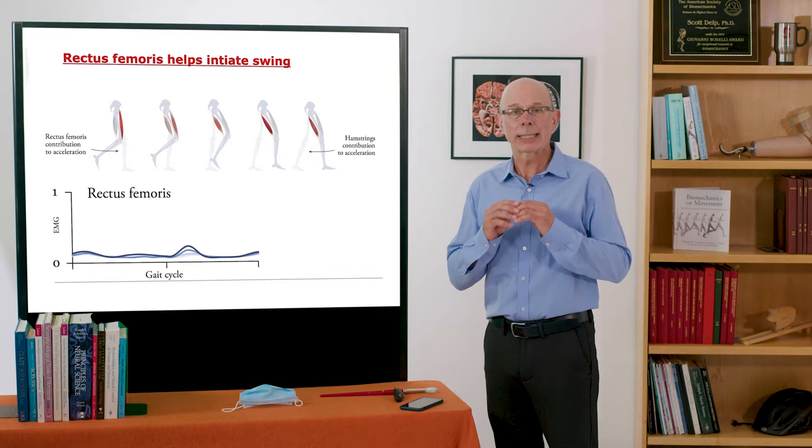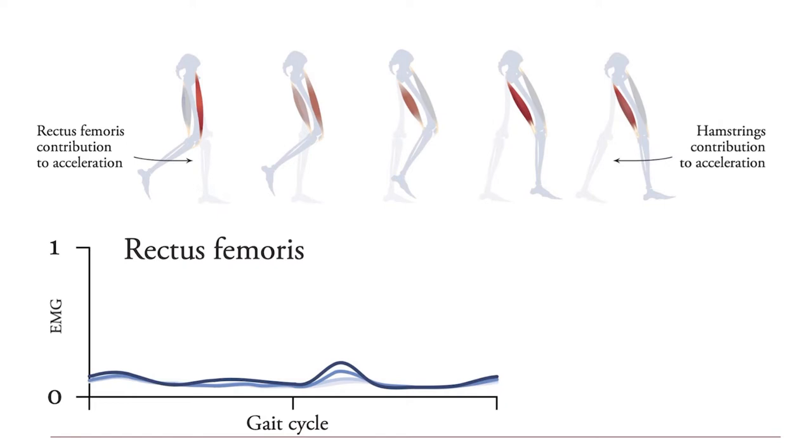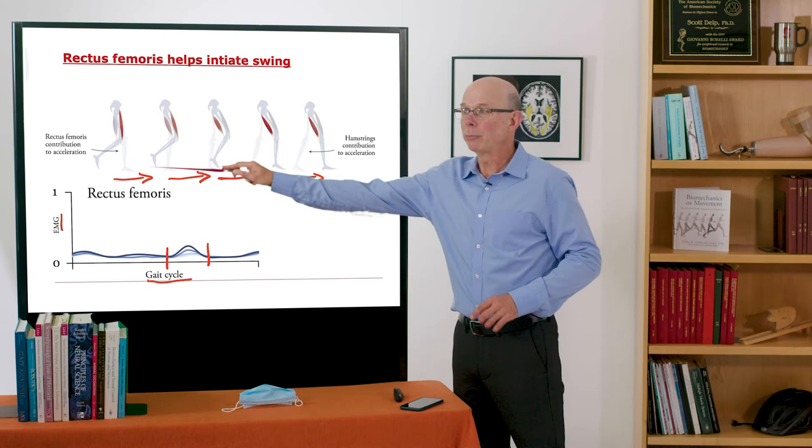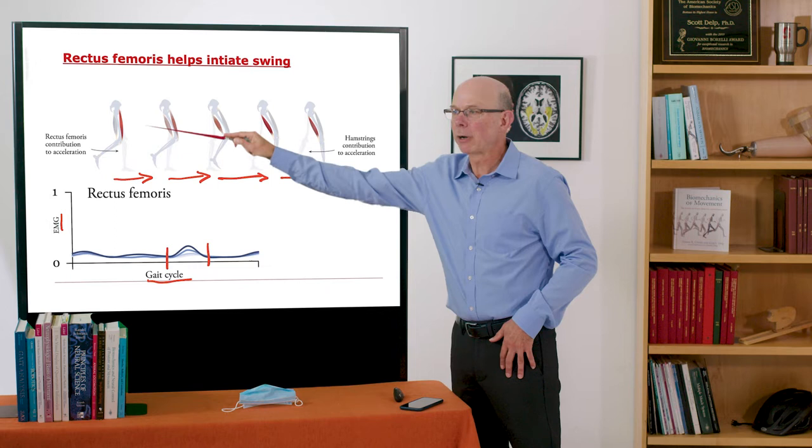But what it's particularly good at is actually moving the whole limb forward. That's what I'm showing here. Rectus femoris moves the whole leg forward and you can see it when it's active. So here's the rectus femoris EMG, I'm plotting versus the whole gait cycle here. The swing phase starts right about here and you see rectus femoris is on to initiate the swing phase. What I'm showing up here is just the swing phase and at the beginning of swing, the rectus femoris is highly active and pulls the limb forward.